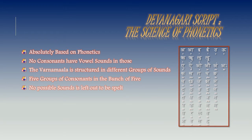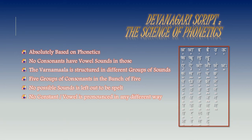There is no possible sound left out to be spelt, which is evident with the Bahra Khadi. All consonants are pronounced with different muscle combinations of the mouth. Bahra Khadi is defined as a combination of each consonant with all the vowels. So it becomes: Ka, Ka, Ki, Ki, Ku, Ku, Ke, Ka, Ko, Kao, Kan, Kah, Kri. There is no possible sound left out. No consonant or vowel is pronounced in any different way — it is perfectly in sync with phonetics.